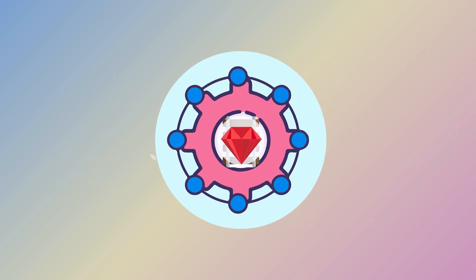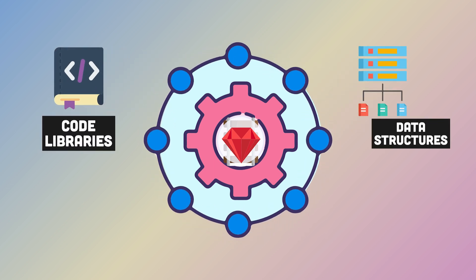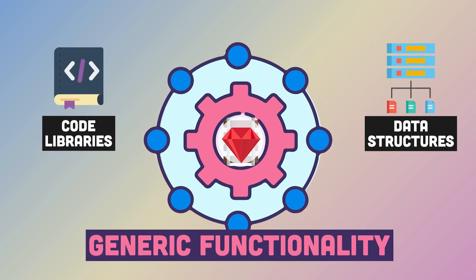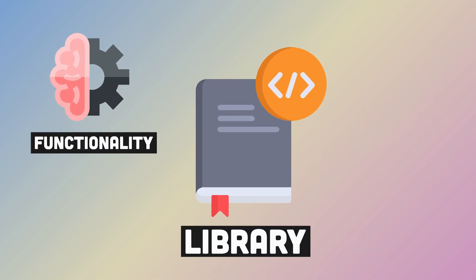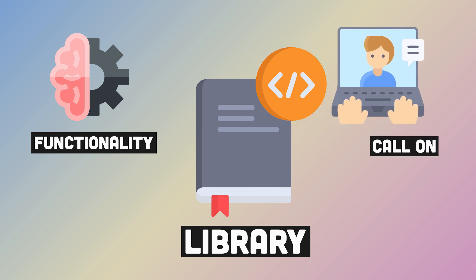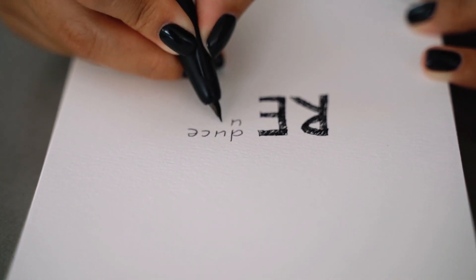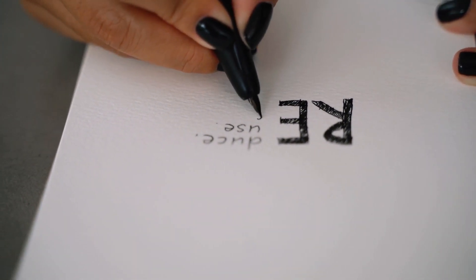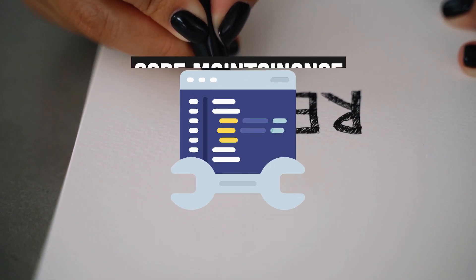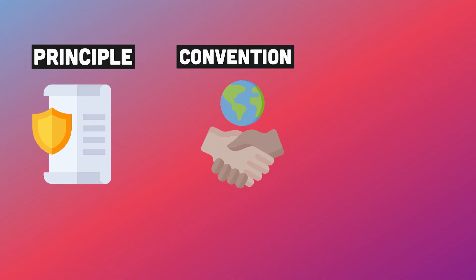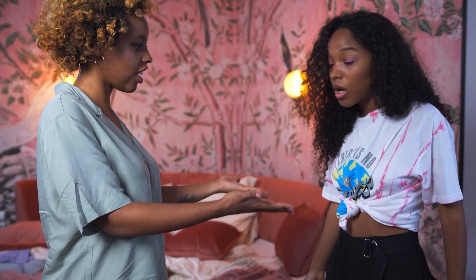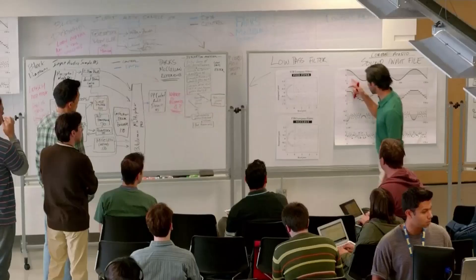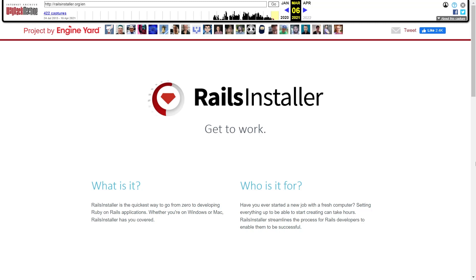A framework is a set of code libraries and data structures that provide generic functionality that can be used, overwritten, and further specialized. A library typically provides some functionality which just sits in our code and acts only when we call it. Ruby on Rails is built upon a basic software design principle — DRY, Don't Repeat Yourself. DRY code is easier to maintain. It also follows the principle of convention over configuration. Rails is very opinionated, and most of the time those opinions are not controversial. You can also override the default configuration, and the Rails framework can pay big dividends as your web application matures and grows.